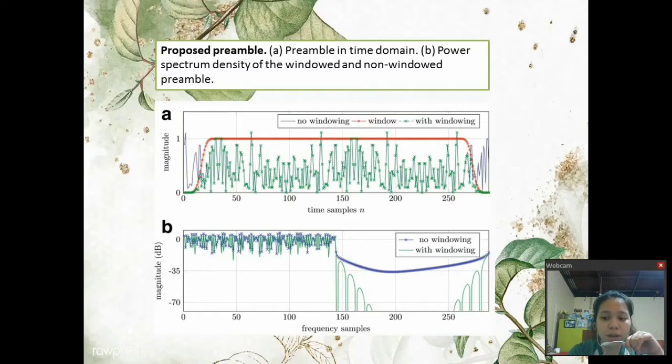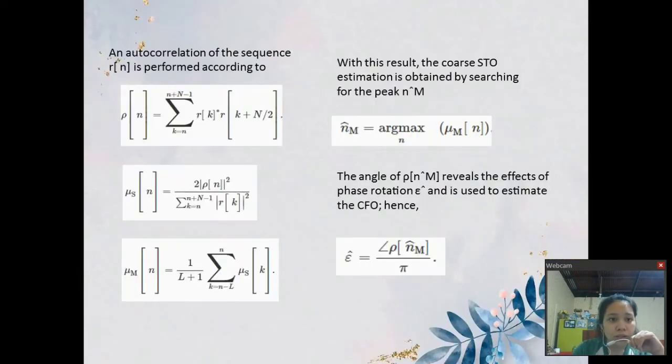On the receiver side, a set of samples R of N is collected. Among those, the transmitted preamble needs to be received at least once in order to be able to estimate time and frequency offsets. An auto-correlation of the sequence R of N is performed.